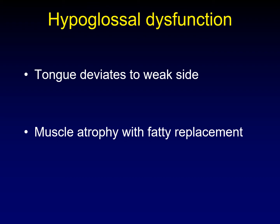When the hypoglossal nerve is injured, the clinical manifestation is tongue deviation toward the weakened side on protrusion. Radiologically, we look for atrophy of the hemi-tongue. There is usually a perfectly straight line down the anatomic center of the tongue, with normal muscle on one side and fatty atrophy on the other.